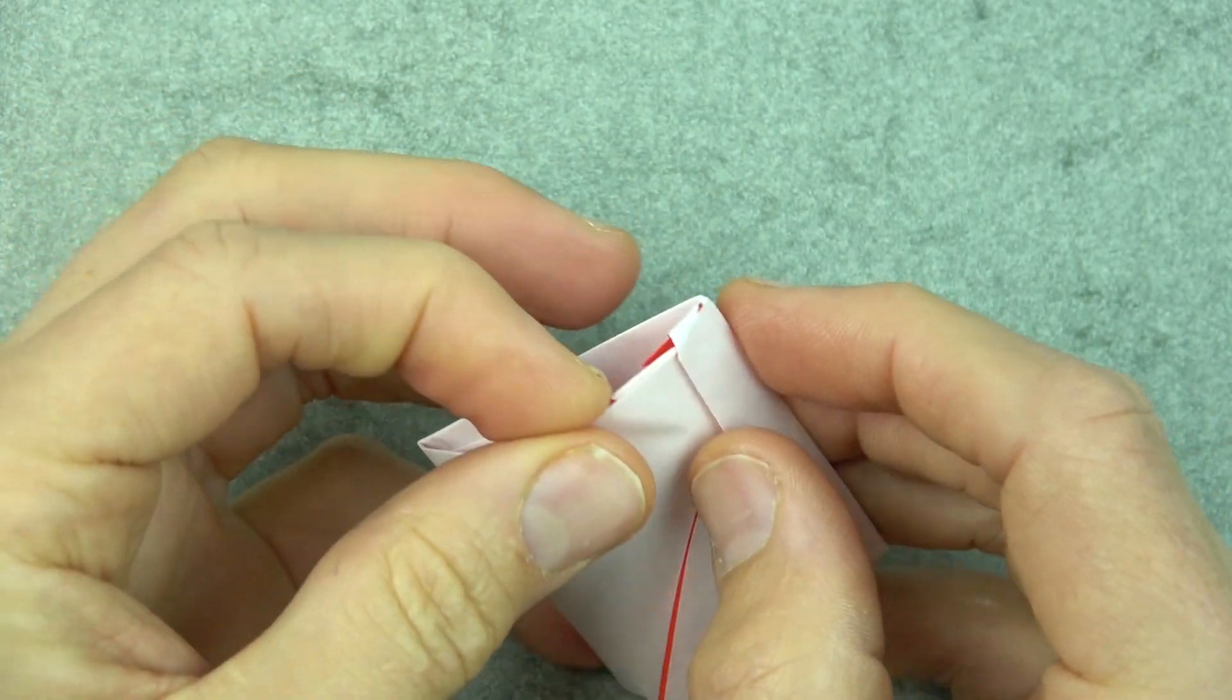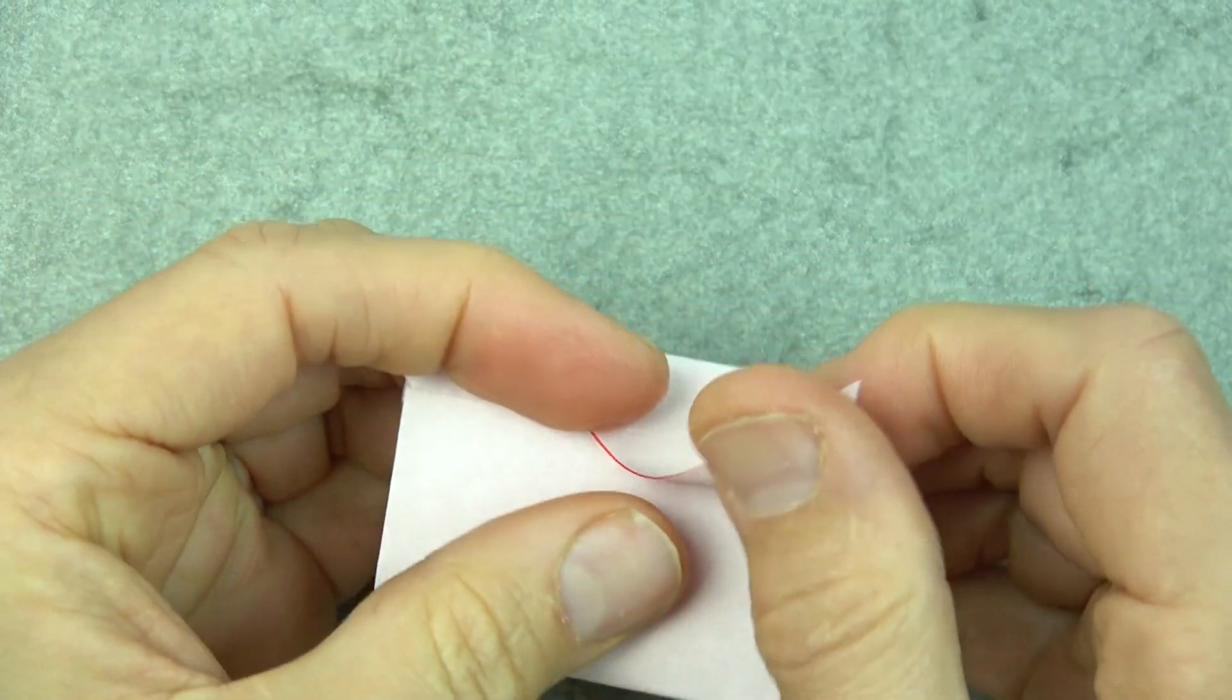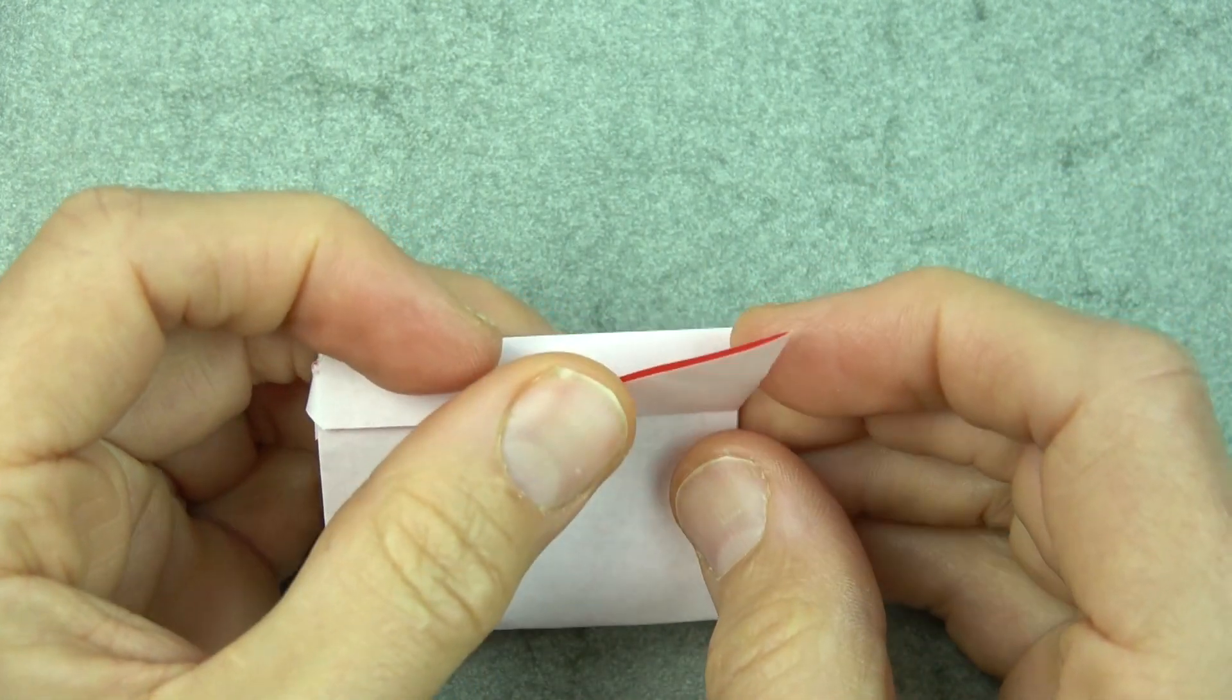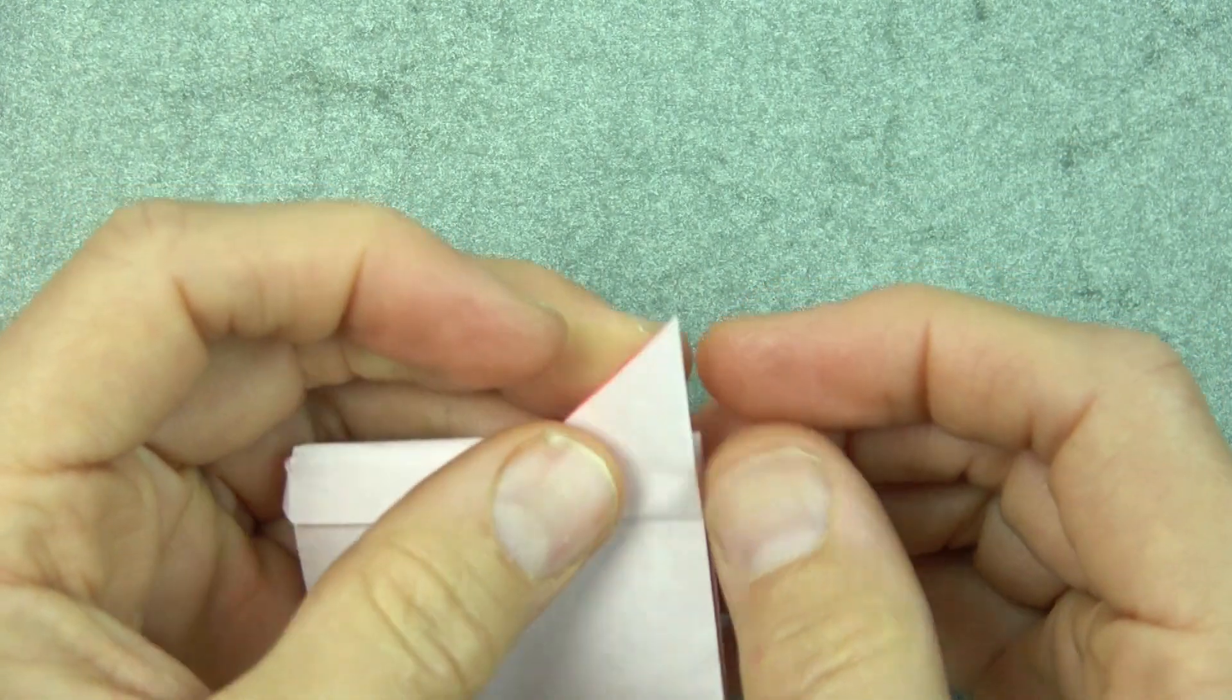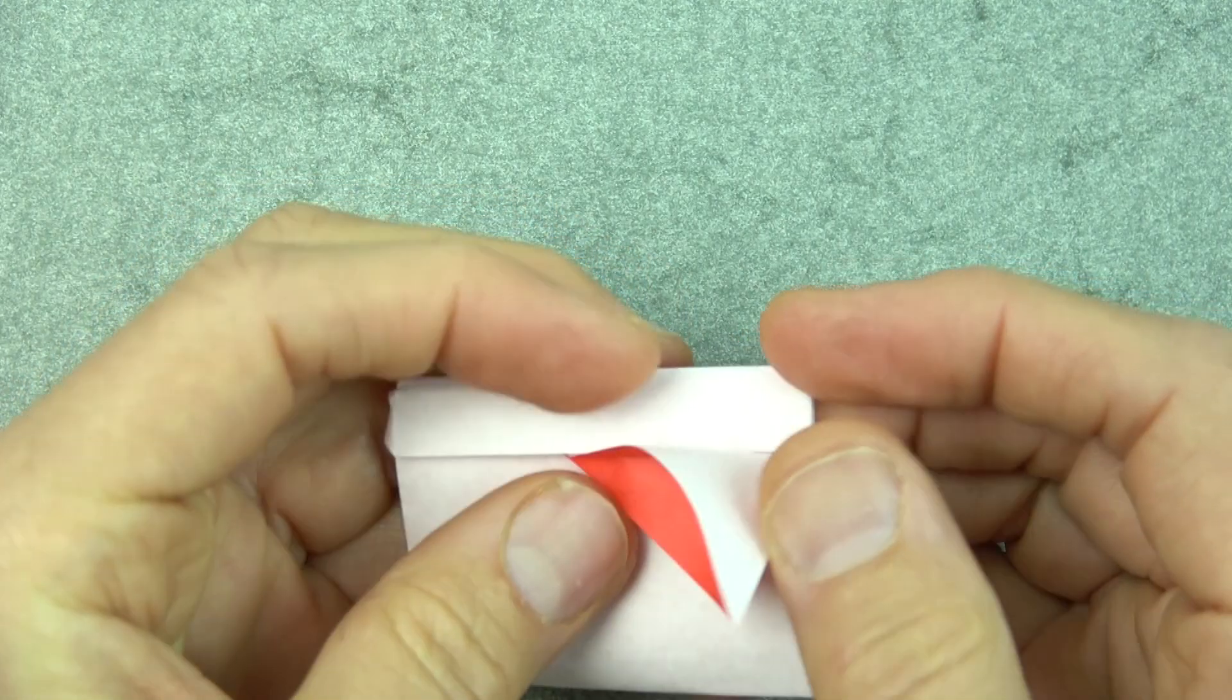So stick it back in there. And now fold this flap over the edge and open the pocket and squash it.